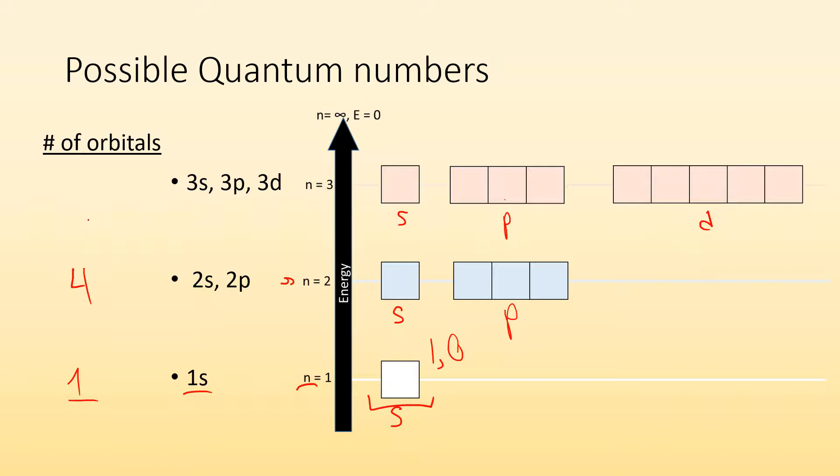In the third energy level, we have three sublevels. So how many orbitals are there for that? Man, I got to count. Look at that. It's nine. So what are the quantum numbers for this one? Well, let's see. If it's in the third energy level, the first number is a three. If it's in the S sublevel, the next number is a zero.